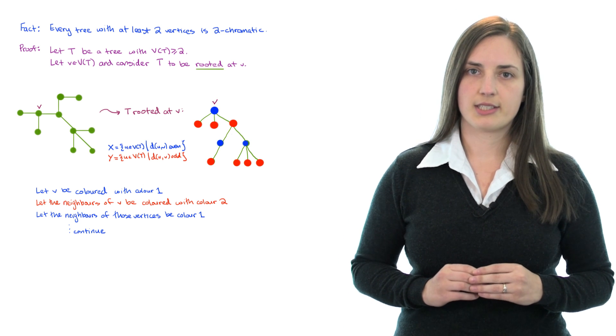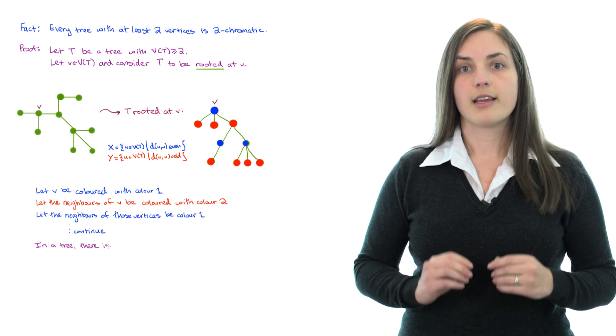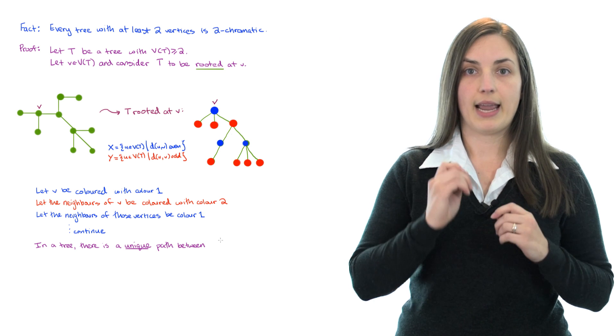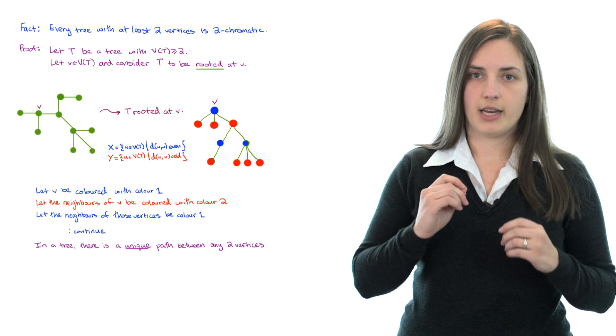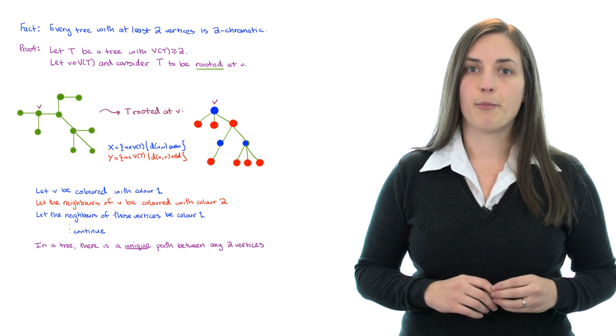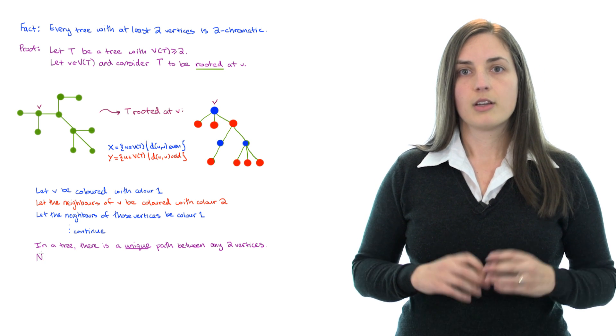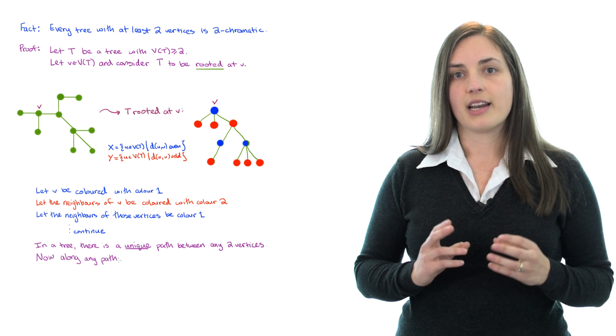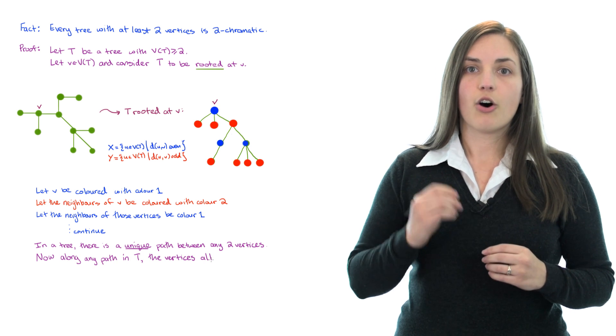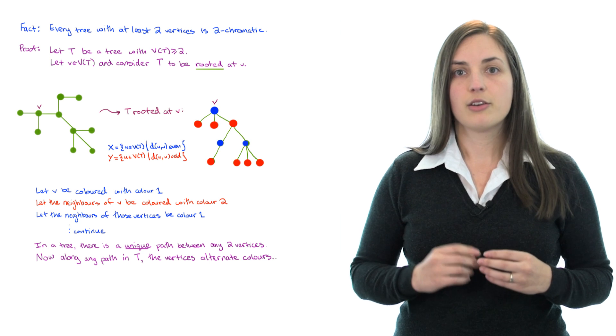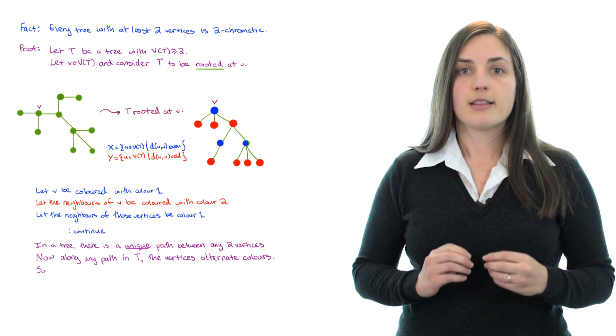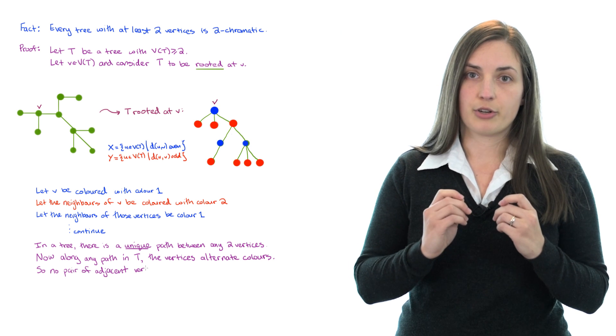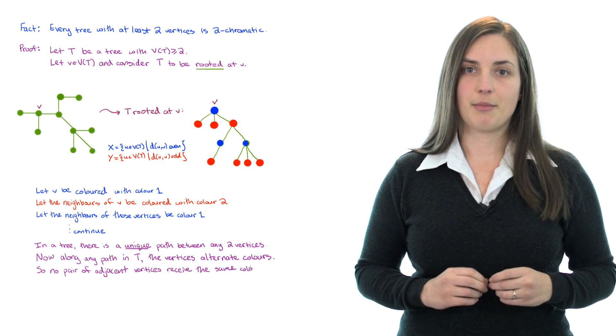It's pretty straightforward to see that in a tree, there is a unique path between any pair of vertices. If there wasn't a unique path between any given pair of vertices, then we would wind up with cycles. We have it such that every path in our tree alternates colors from red to blue to red to blue.